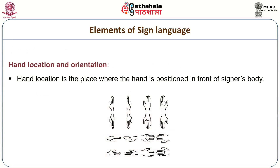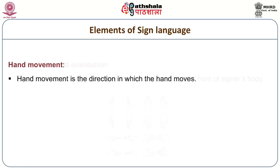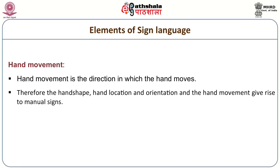Hand location is the position where the hand is placed in front of the signer's body. Hand movement is the direction in which the hand moves. Hand shape, location, and movement are the formation elements of a sign.